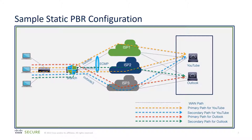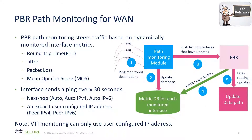Here's an example of a static policy-based routing configuration. Notice we're doing ECMP through ISP1 and ISP2 to YouTube, and we're sending our Outlook traffic through ISP3. As secondary paths, we can send YouTube traffic through ISP3 or Outlook traffic through ISP2. Our goal is to take this static PBR configuration and make it dynamic by steering traffic based upon dynamically monitored interface statistics: round trip time, jitter, packet loss, and mean opinion score. We will update the PBR module every 30 seconds.